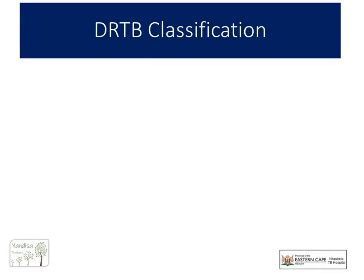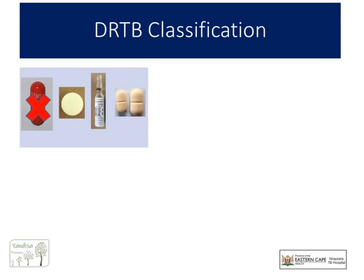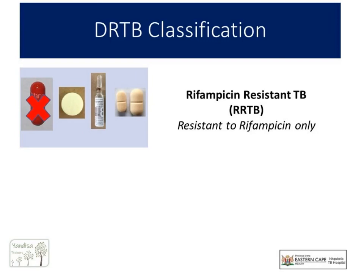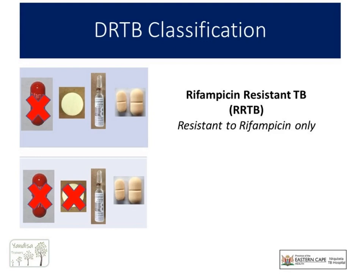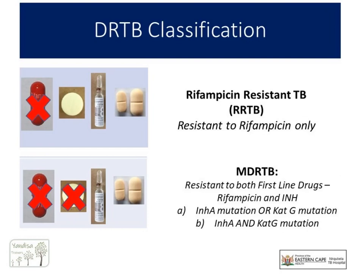Once you have your DRTB result, you can now classify the type of TB that your patient has. To classify, we still think in terms of the two key first-line drugs — rifampicin and INH — and the two key second-line drugs, fluoroquinolones and the now-shelved injectables. If the bacilli are only resistant to rifampicin, we call it RR-TB. If the bacilli are resistant to both first-line TB drugs, INH and rifampicin, we call that multi-drug-resistant TB or MDR-TB. These can be differentiated by whether there is only one INH mutation or dual mutations.